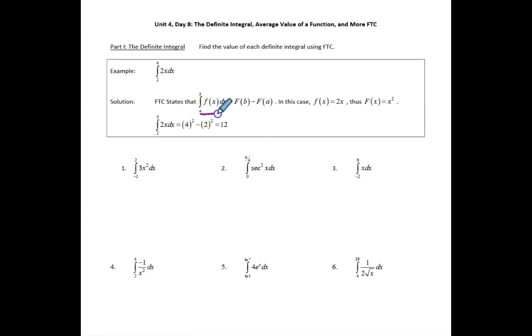That's this right here, that the definite integral of the function little f from a to b is the exact same thing as the total change on its antiderivative, meaning big F of b minus big F of a. We can use this to evaluate the definite integral of any function for which we can find the antiderivative.